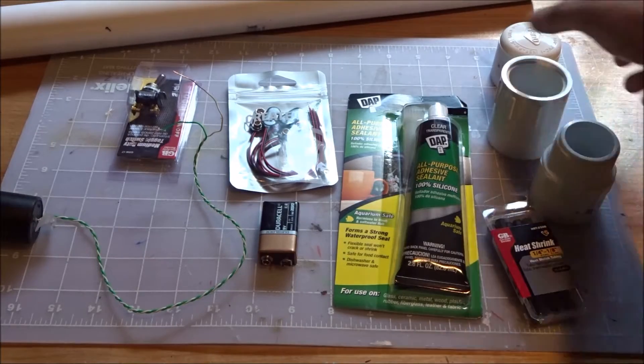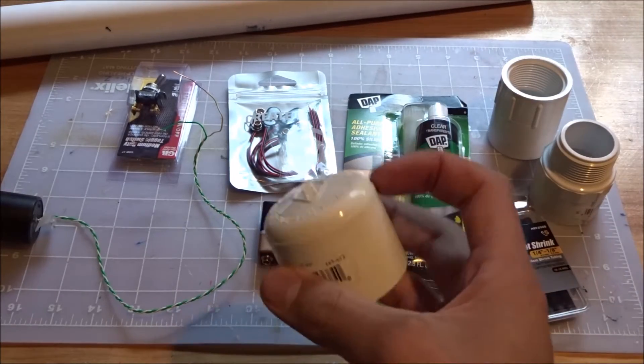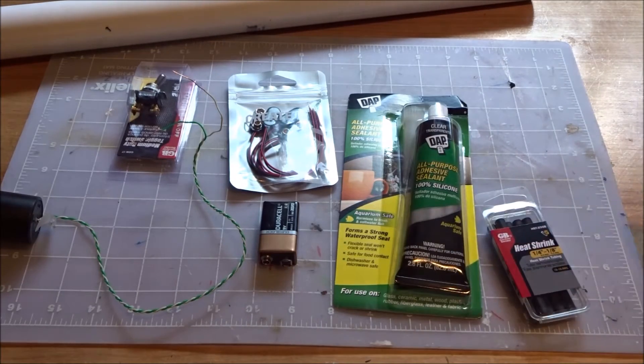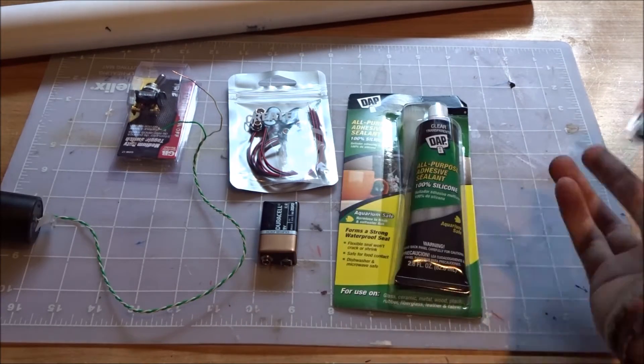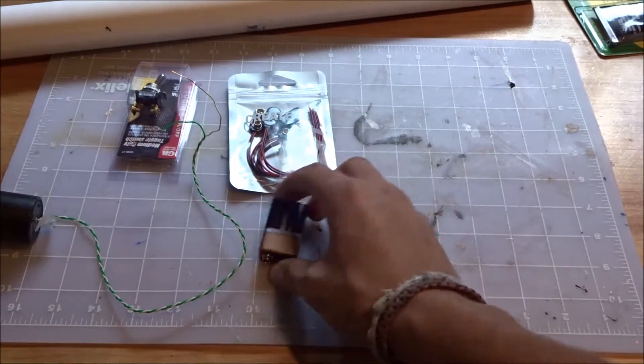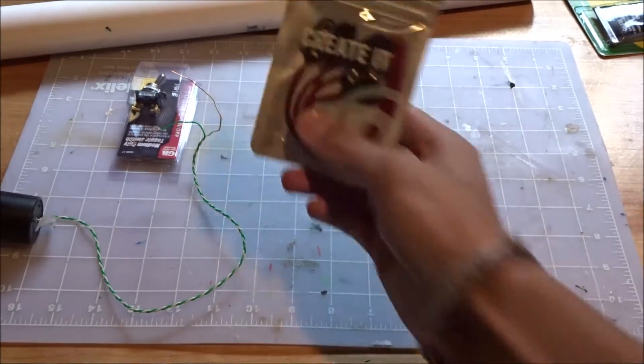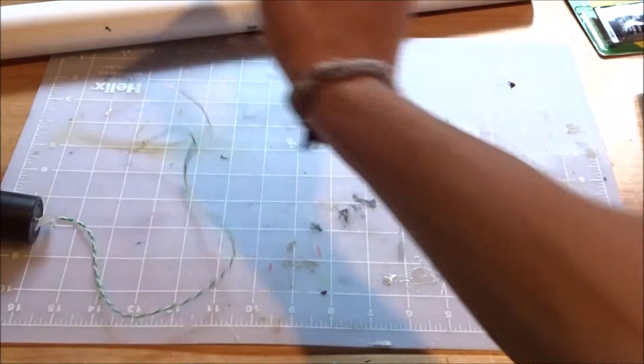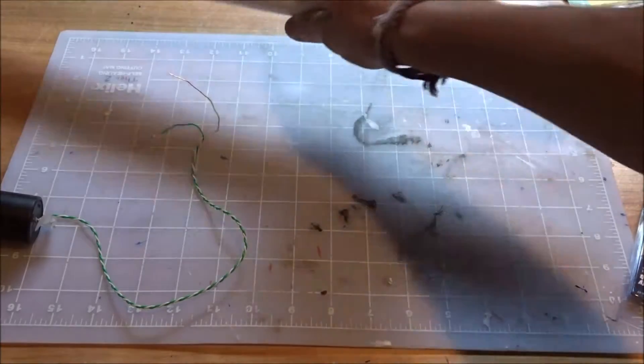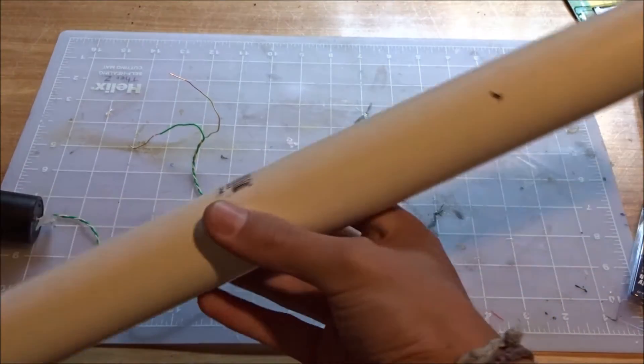Okay, let's get to the build. The materials I'm going to be using are this 1 1/4 end cap, 1 1/4 male and female adapters, heat shrink tubing, 100% silicone adhesive, 9-volt battery, 9-volt battery connectors, toggle switch. It doesn't need to be anything fancy. One and a quarter tubing,